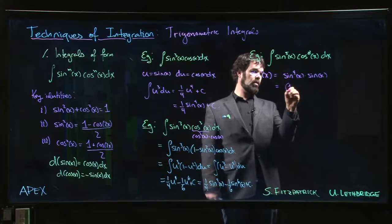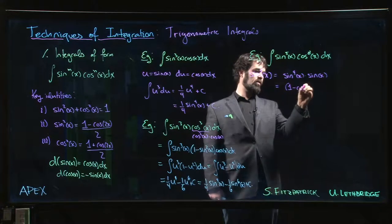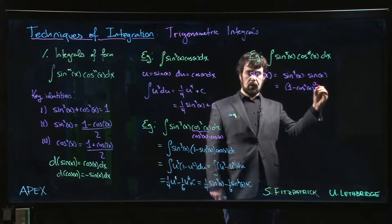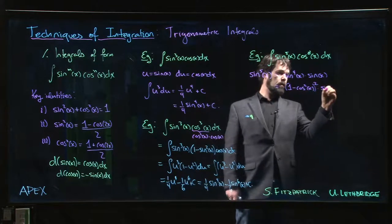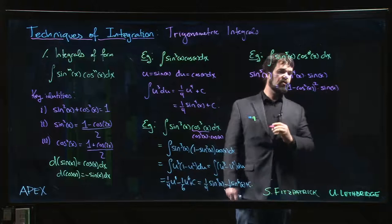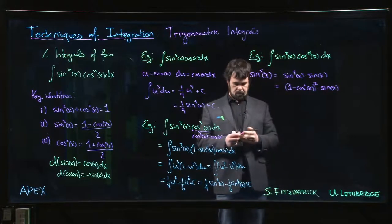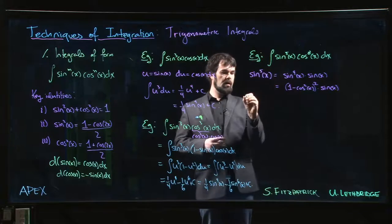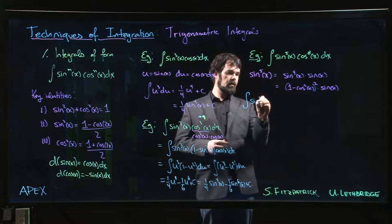So I can write this as (1 - cos²x)² - it's the same as sine to the fourth times sine x. We make that substitution and we get the following: the sine to the fifth power x times cosine to the eighth power.